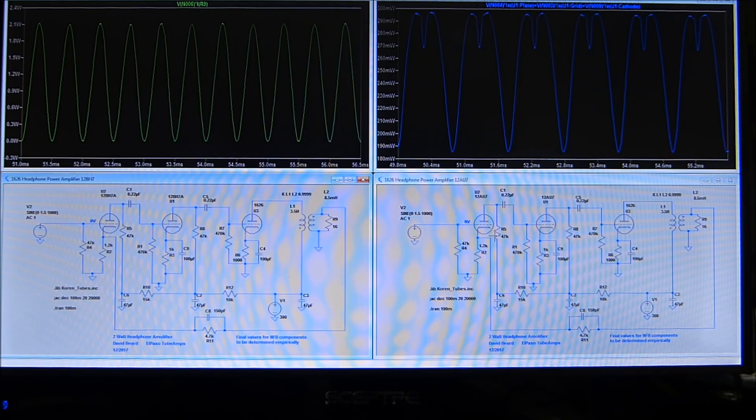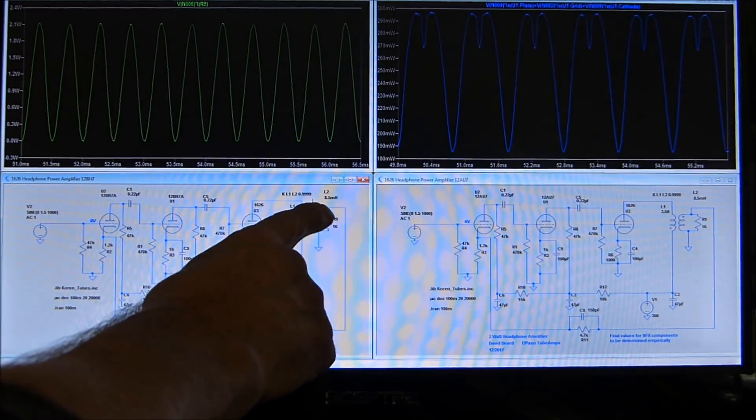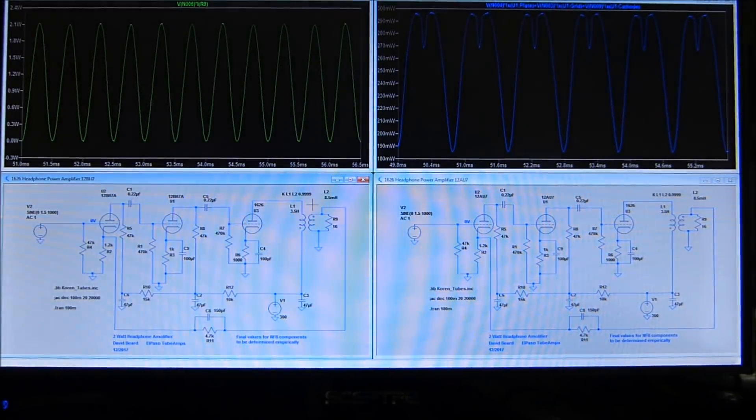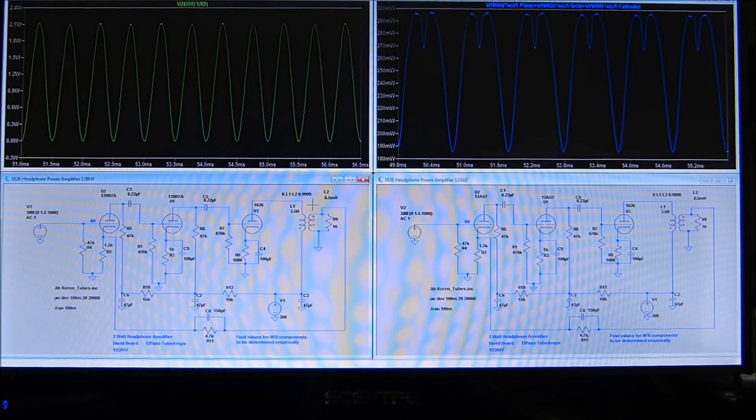So this is modeling with a 12BH7, this is modeling with a 12AU7. The difference is ever so slight. Right here I put down here about, final value to the negative feedback components are going to be determined experimentally, and that's what I'm going to do. I've got a 4.7K in it right now, 150 picofarad, those are just kind of common values. This little output transformer, there is absolutely nothing special about it, nothing at all. You can find these little output transformers in just about any piece of old vintage stereo equipment made by Motorola or RCA or who knows, from the 60s. The primary inductance is 3.5 henries, the secondary inductance is 8.5 millihenries. If you do that ratio you get like 411. If you take the square root of that you get 20, so it's a standard little 20 to 1 voltage ratio.